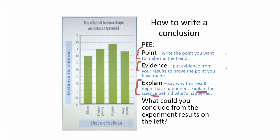What could you conclude from the results on the left? This is a practical that looked at the effect of balloon shape on the distance it travels. On the Y axis, there's the distance in meters traveled. On the X axis, there's the shape of the balloon. It's a bar chart because these things aren't related.